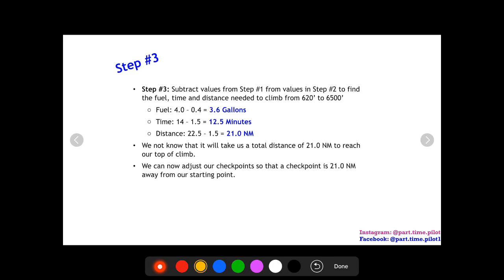So we do four minus 0.4 for fuel to get 3.6 gallons. We do 14 minus 1.5 to get 12.5 minutes for time. And we do 22.5 minus 1.5 to get 21 nautical miles for distance. Now these are the fuel, time, and distance values to climb from our pressure altitude of 620 feet at our ground temperature to our cruise altitude of 6500 feet at our cruise temperature.